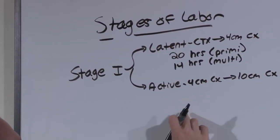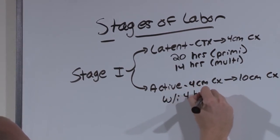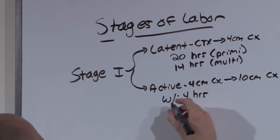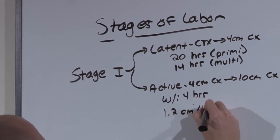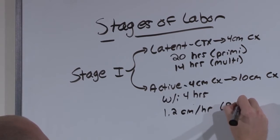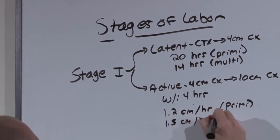The active phase should occur within 4 hours, and the cervical change will be 1.2 centimeters of change per hour for a primi and 1.5 centimeters per hour for a multi.